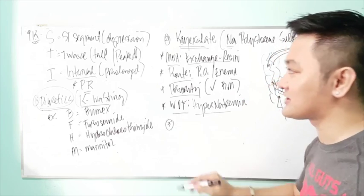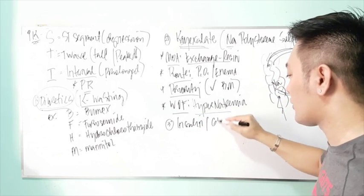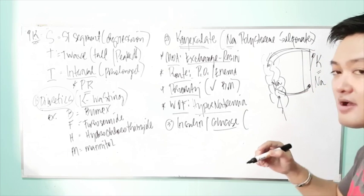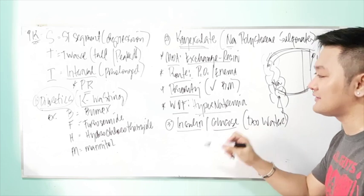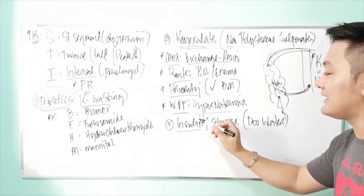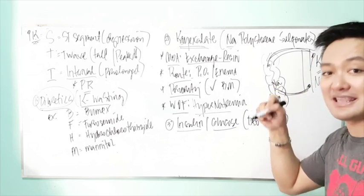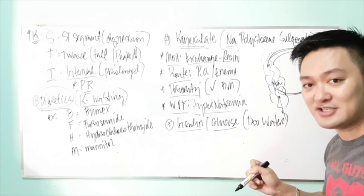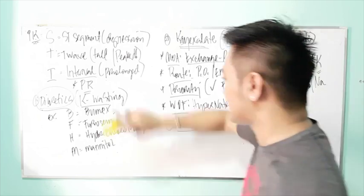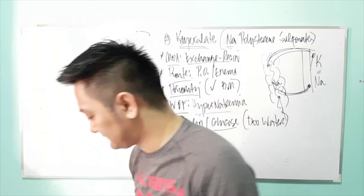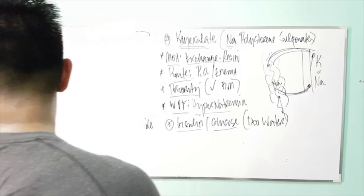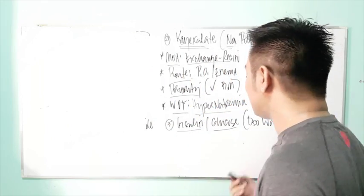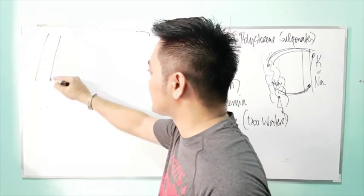Another drug for hyperkalemia is insulin combined with glucose, usually D50 water. Insulin, with the help of glucose, brings potassium inside the cell — because potassium is an intracellular electrolyte. Insulin works like a key: one hand carries glucose, the other carries potassium. When both hands carry their substances, insulin opens the cell wall, dumping sugar and potassium inside the cell, thereby correcting hyperkalemia.